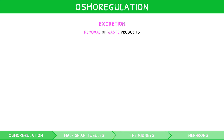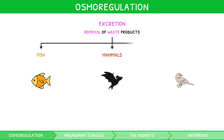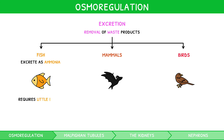For your IB Biology Higher Level exam, the IB expects you to recall the ways in which fish, mammals, and birds excrete their nitrogenous waste. Fish excrete their waste as ammonia, which is advantageous as it requires little energy to produce. However, it is very toxic and so must be diluted and removed very quickly using water — although since they swim in water, this is hardly a concern.